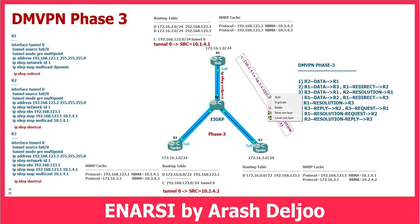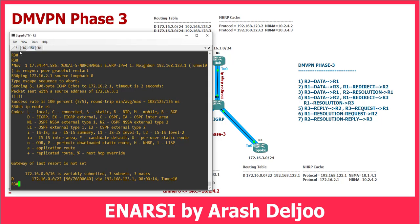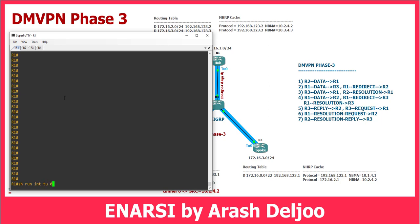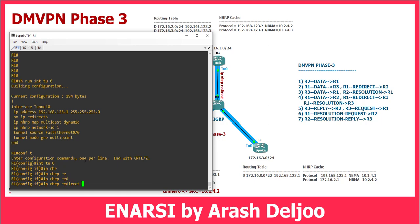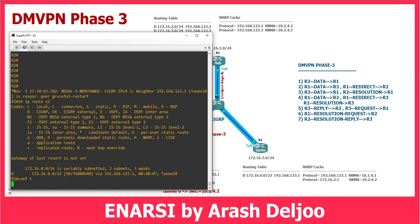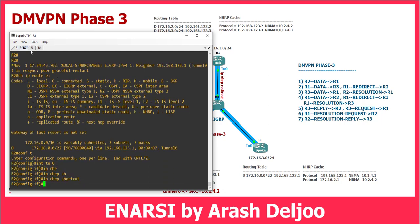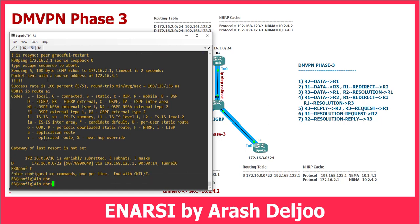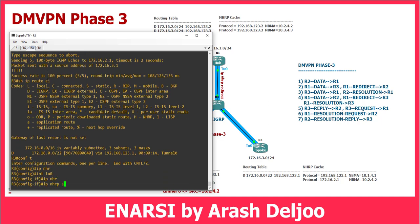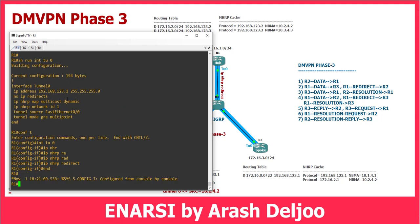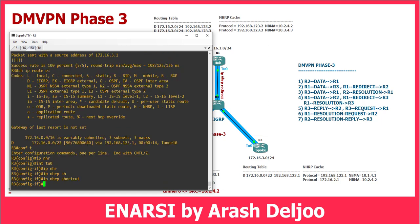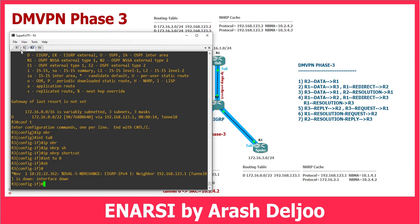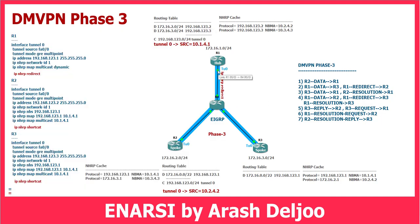We should now implement this scenario in Phase 3 and then verify all of these steps. Let me configure this scenario — we have configured Phase 2. Look here: show run interface tunnel 0. We need only to configure one command on Router 1: interface tunnel 0, then `ip nhrp redirect`. On Router 2 and Router 3: conf t, interface tunnel 0, `ip nhrp shortcut`. On Router 3: conf t, under interface tunnel 0, also `ip nhrp shortcut`. Let me clear things — it's better to shut down all tunnel interfaces to start from scratch: `interface tunnel 0 shutdown` on Router 2 and Router 3.